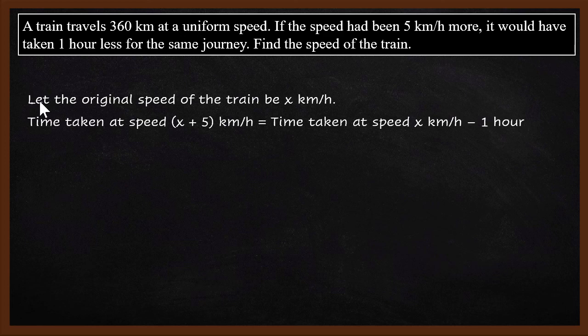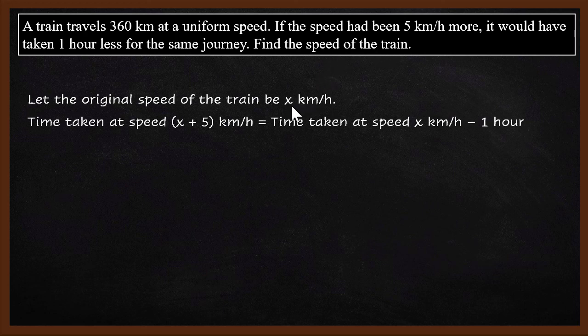First we have to note down what is given. Let the original speed of the train be x kilometers per hour. We are just keeping that as a variable and calling it x.